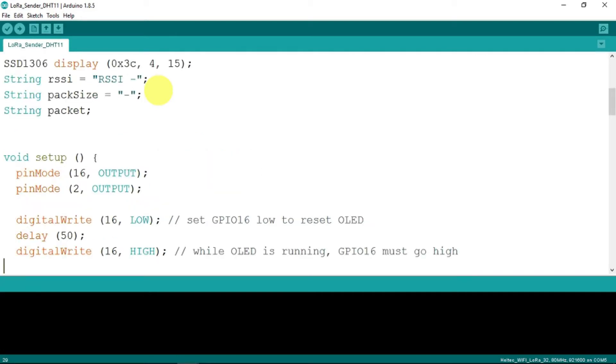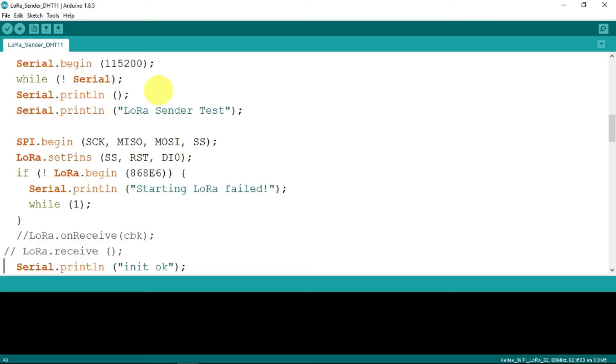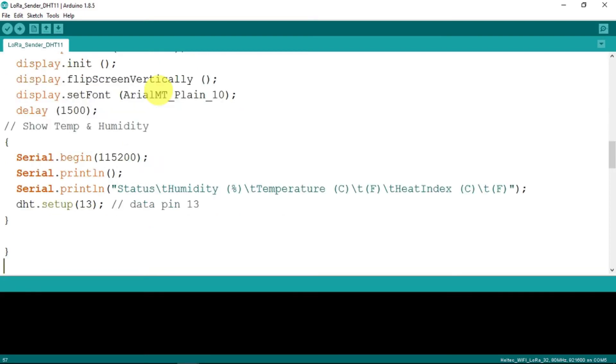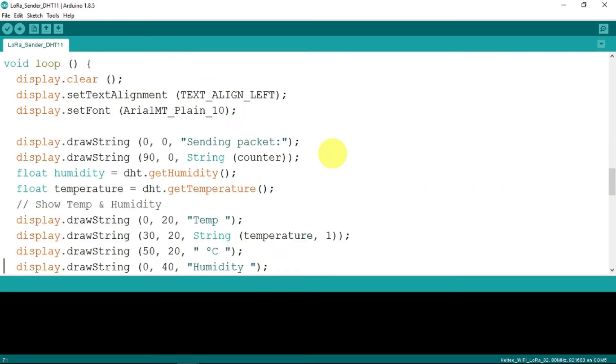And if we go down the page, nothing to change there, or on that point. Just for debugging purposes, here in the serial monitor we also output the humidity and temperature data.